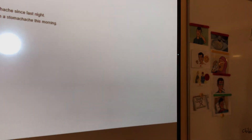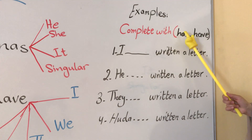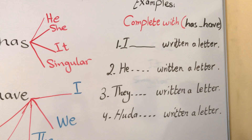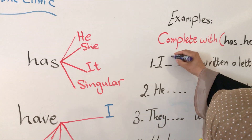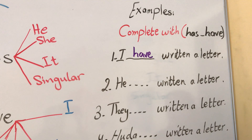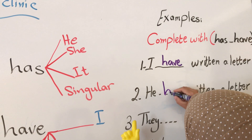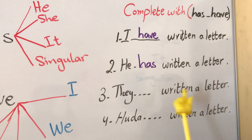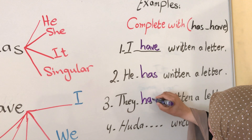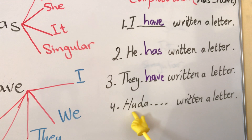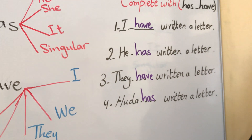Before we finish this class, let's do another exercise with examples for 'has' and 'have'. Please complete with 'has' or 'have'. Number 1: 'I have written a letter.' Number 2: 'He has written a letter.' Number 3: 'They have written a letter.' The last sentence — Huda: 'Huda has written a letter.' Thank you for listening.